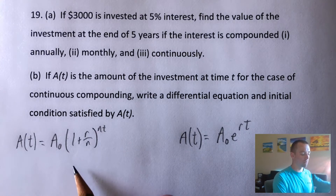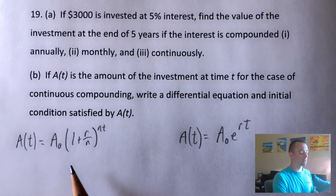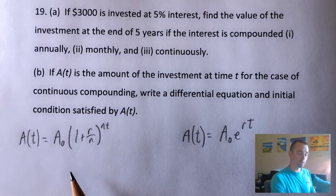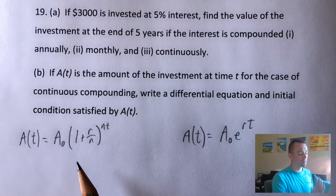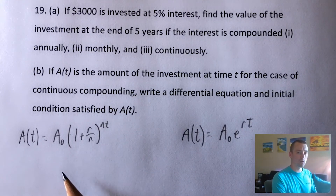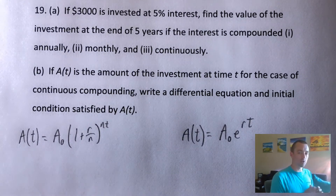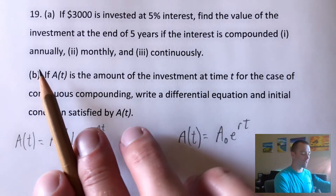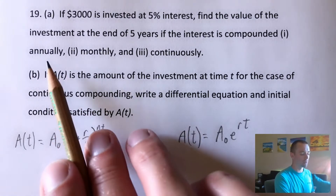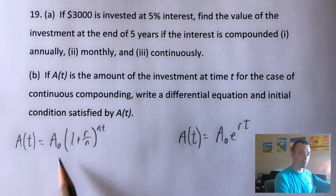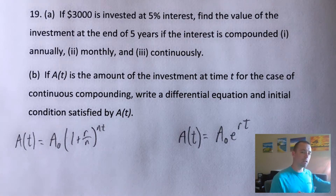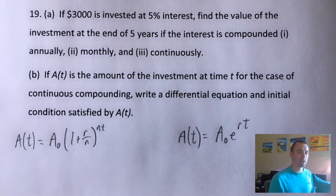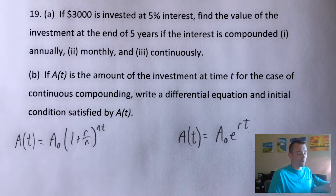The equation on the left is not continuously compounded interest — it's the equation to find the value of an investment or loan for interest compounded a certain number of times per year. Since we're trying to find what happens compounded annually and monthly, for parts one and two we're going to use this equation, where N is the number of times per year the interest is compounded. To do part A we can basically take both equations and plug in the pieces I just talked about.